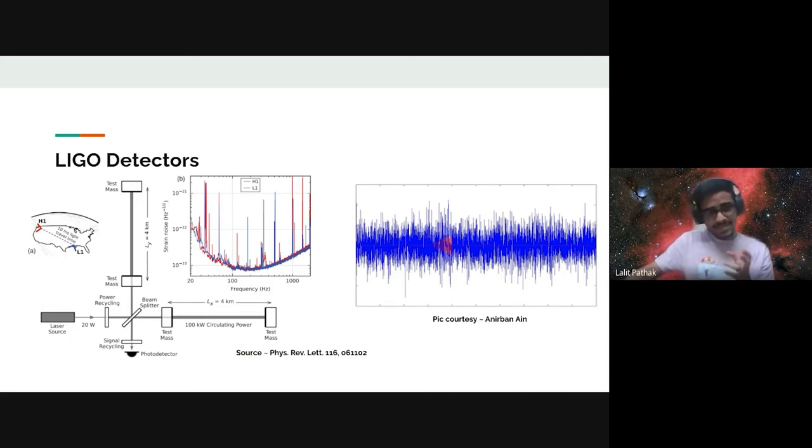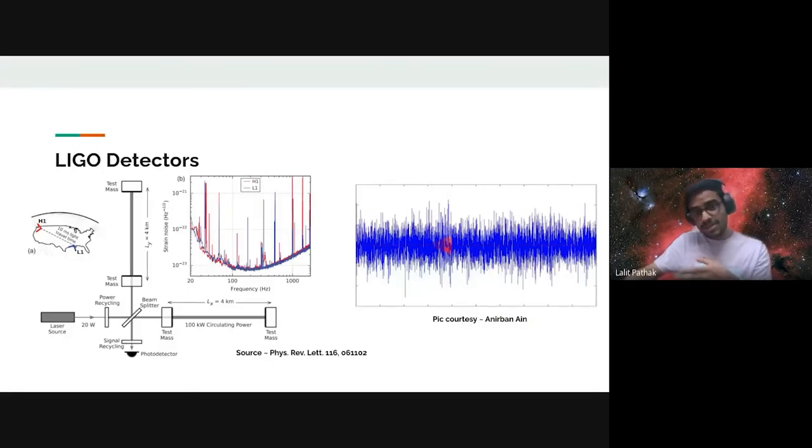On the right, you can see the gravitational wave signal shown in red, buried in the massive noise shown in blue. The noise from various sources like instruments and surroundings such as terrestrial sources and seismic sources is much louder than the signal itself.